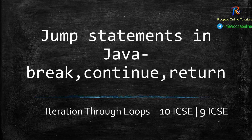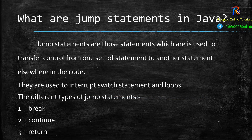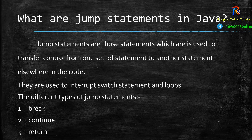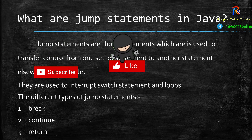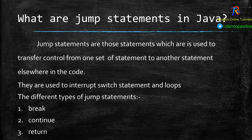I'm going to teach you about the jump statements in Java. Jump statements are those statements which are used to transfer control from one set of statements to another statement elsewhere in the code. They are mainly used to interrupt switch statements and loops. We need a jump statement because when we are executing a set of instructions, we want part of the control to go somewhere else if a particular condition is met or not met.